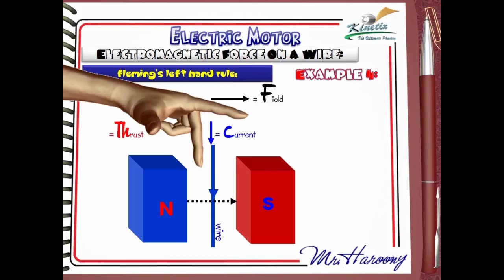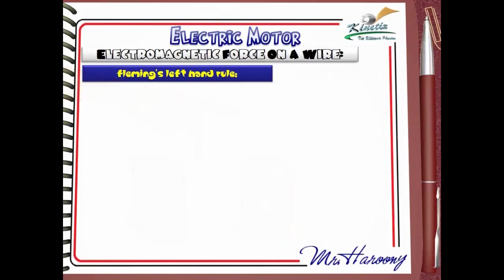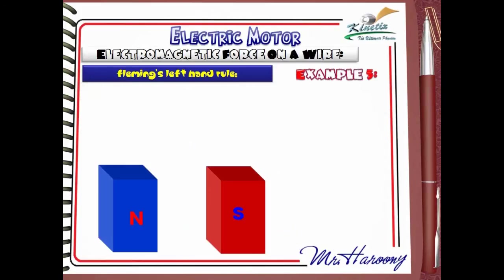The current is given by the second finger and it flows downward relative to the page. According to these directions, applying the same rule, the wire will also be pushed out of the page, as shown by the thumb.